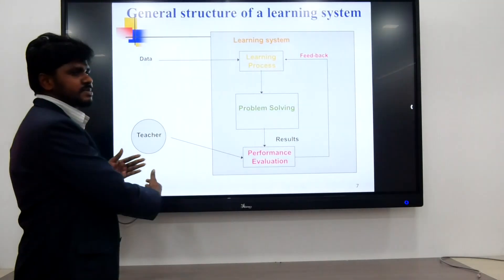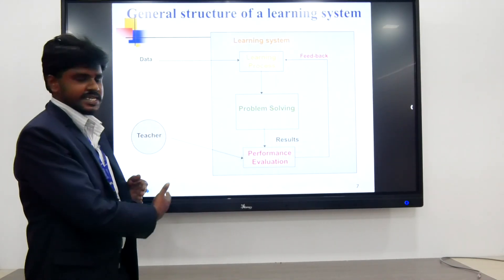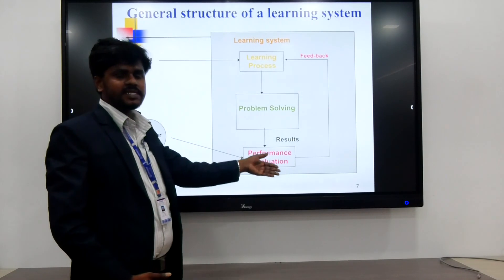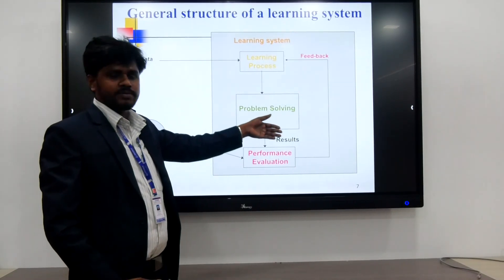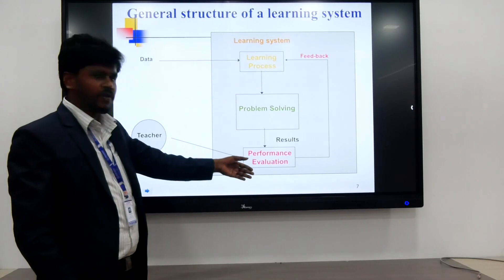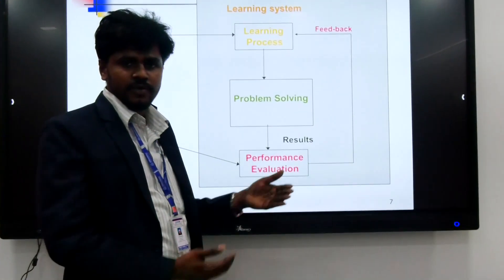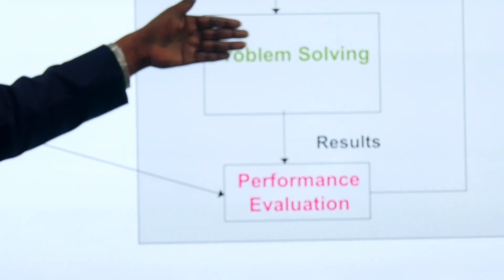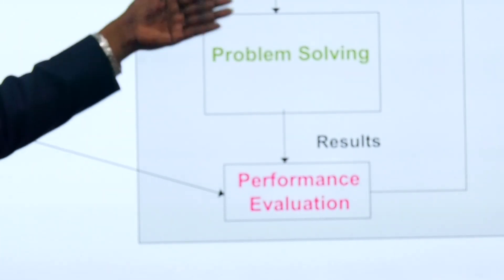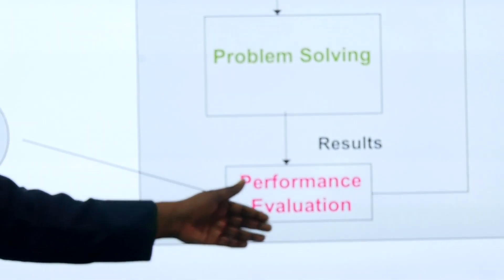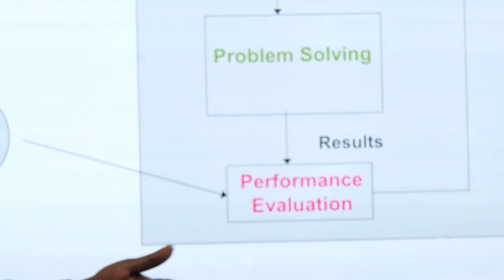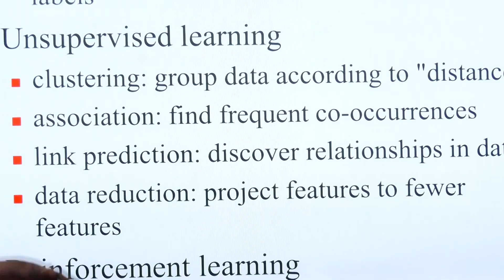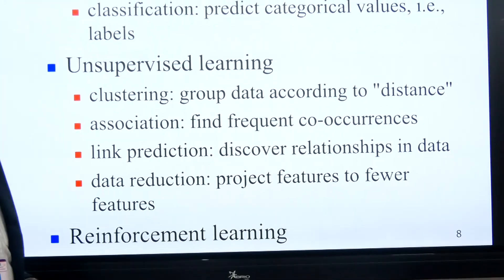Performance evaluation — this is called the testing process. Testing involves problem solving and getting the result for performing evaluation. Feedback is provided for routine in the learning process to produce another solution for the problems. The result is performance, which will be updated accordingly. Next, the machine learning tasks: supervised learning and unsupervised learning — these are the two tasks for the machine learning process.